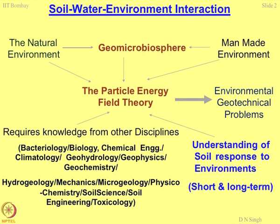This is the big matrix - the Soil-Water-Environment Interaction. On the left hand side you have the natural environment and on the right hand side you have the manmade environment. By definition, natural environment is the environment in its purest form, and manmade environment is the nature which is contaminated, adulterated - not fit for habitation or whatever.